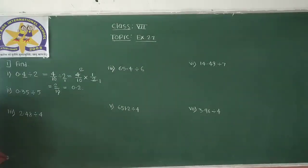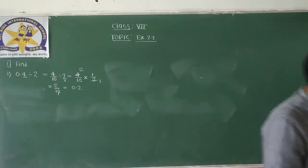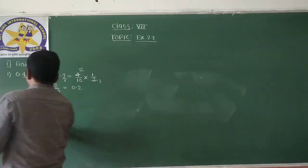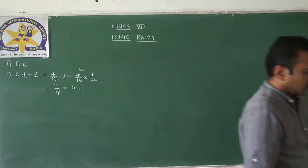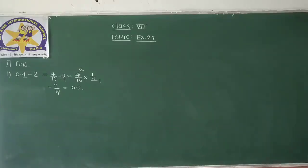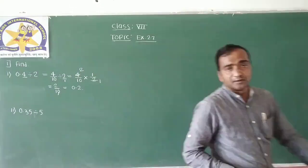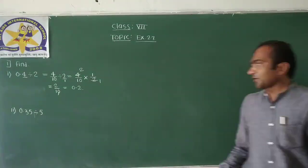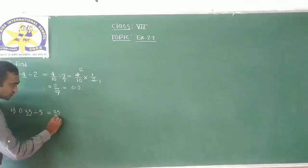Now see the second question. The second question is 0.35 divided by 5. We have to solve this now. 0.35 can be written as 35, since after 2 digits there is a decimal point, so we divide by 100.